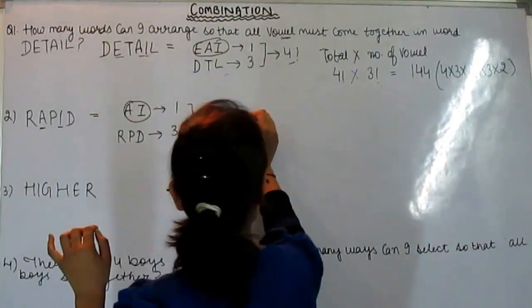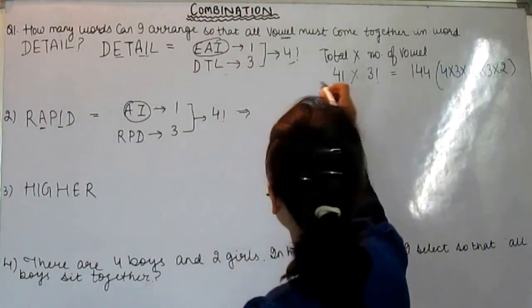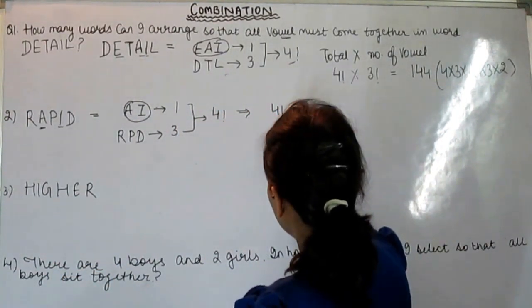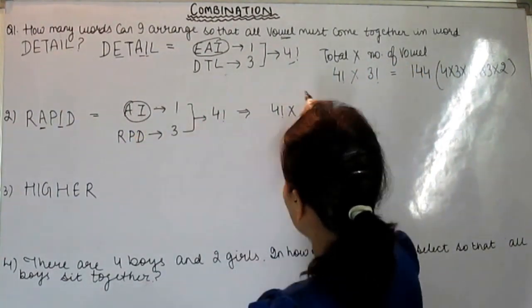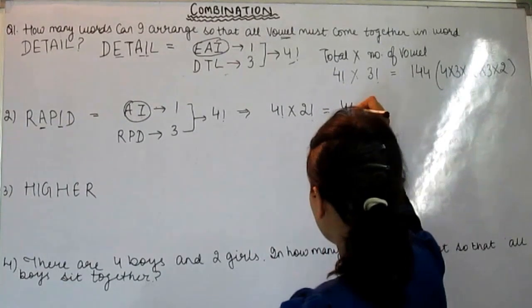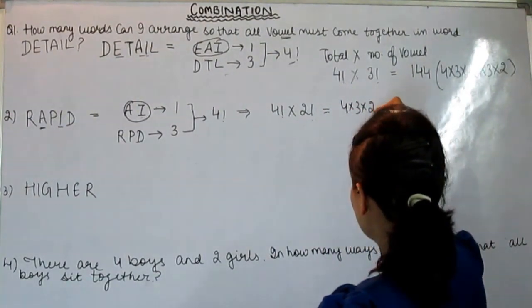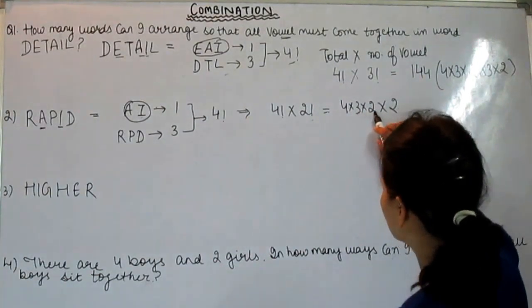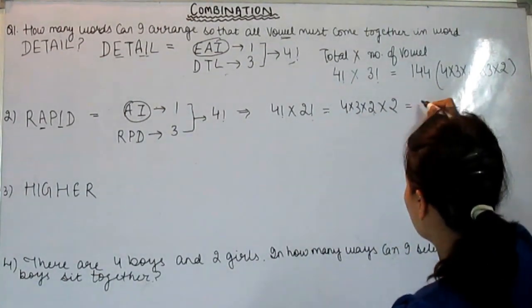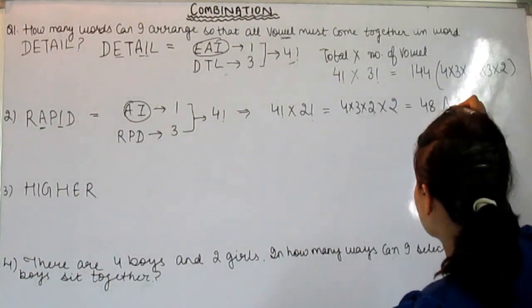So our trick here is total: 4 factorial into number of vowels, which is 2 factorial. 4 into 3 into 2 into 2. 4 times 3 is 12, 12 times 2 is 24, and 24 times 2 is 48. So 48 is the right answer.